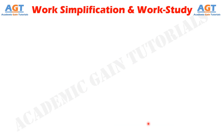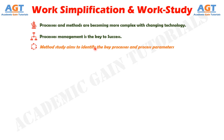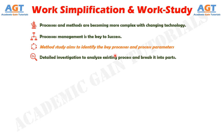Work simplification plays an important role in successful work study. Any production system is characterized by the coordination of machines and equipment, materials, and men. Rapid change in technology and introduction of new technologies are making the processes and methods more complex. Method study aims to identify the key processes and process parameters, and a detailed investigation is carried out to analyze the existing process and break it into parts or operations, which helps to plan and control.